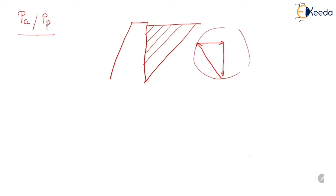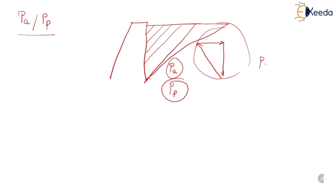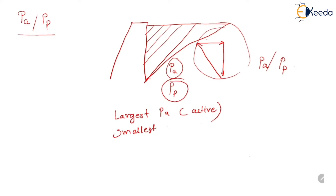Using this force polygon, we can determine the value of PA in case of active pressure condition and the value of PP in case of passive pressure condition. This procedure is repeated by assuming different failure surfaces, and a different value of PA or PP is obtained each time.